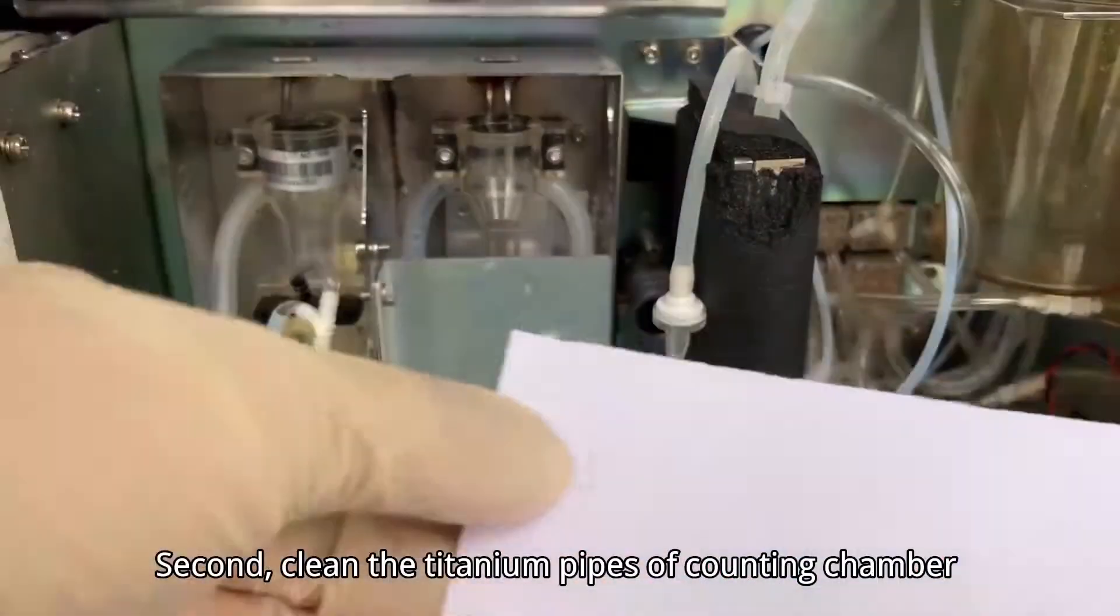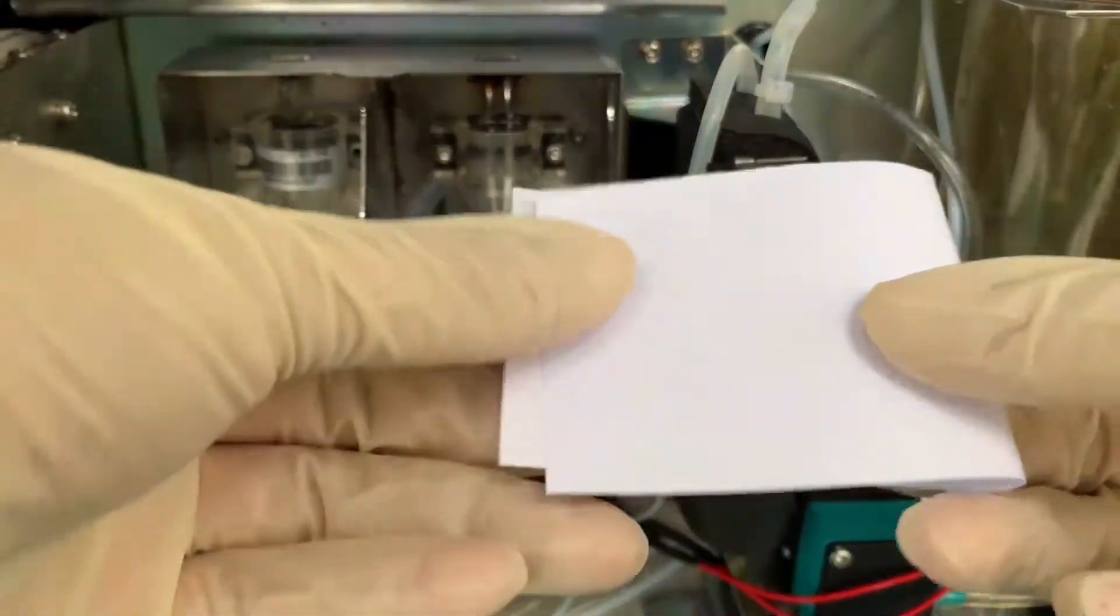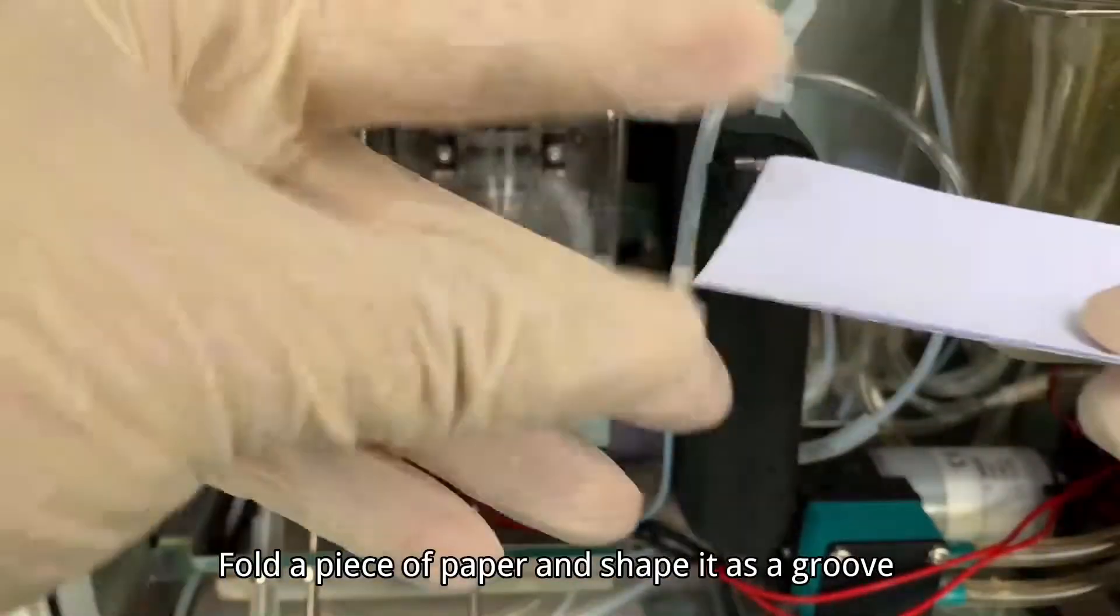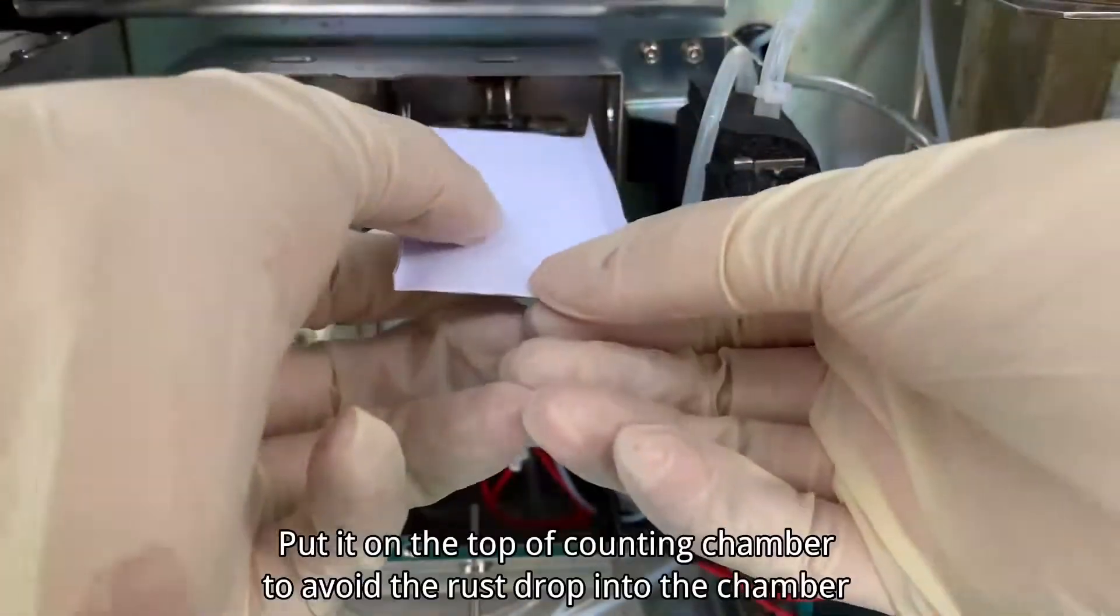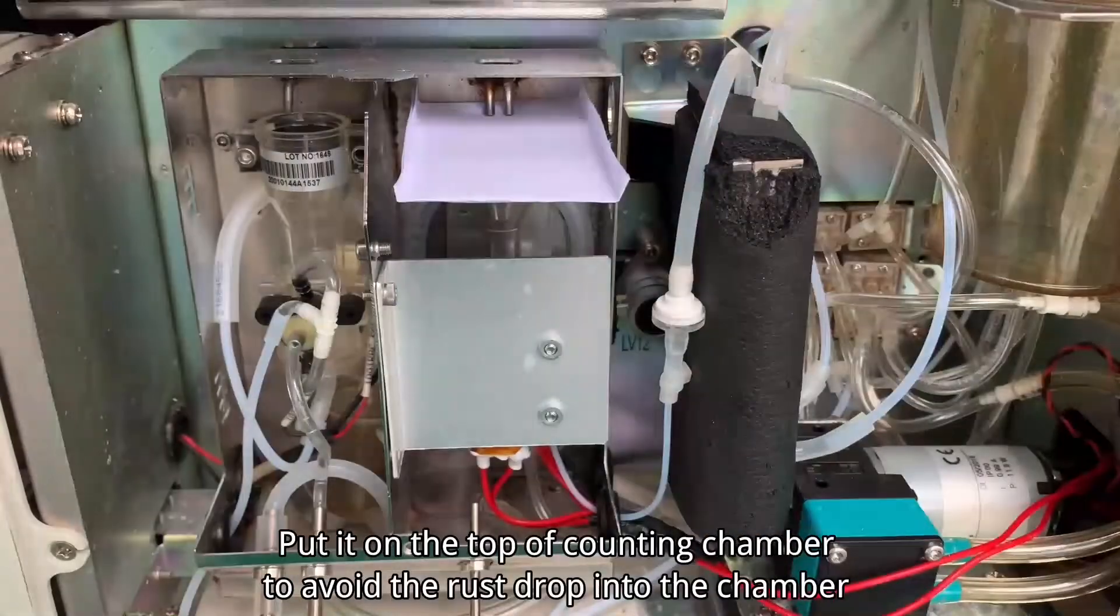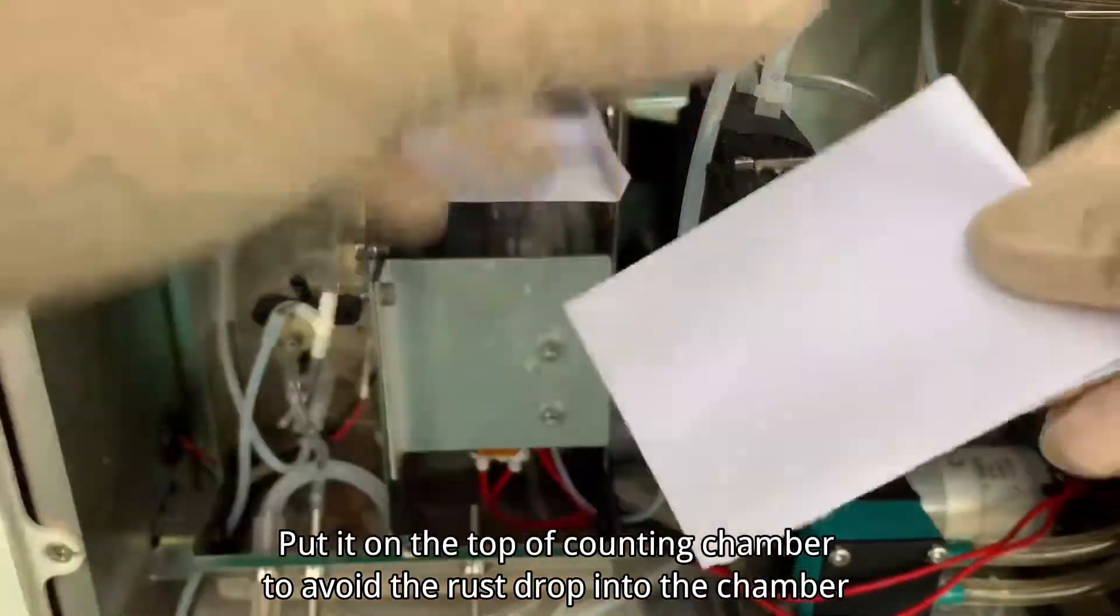Second, clean the titanium pipes of the counting chamber. Fold a piece of paper and shape it as a groove. Put it on the top of the counting chamber to avoid the rust dropping into the chamber.